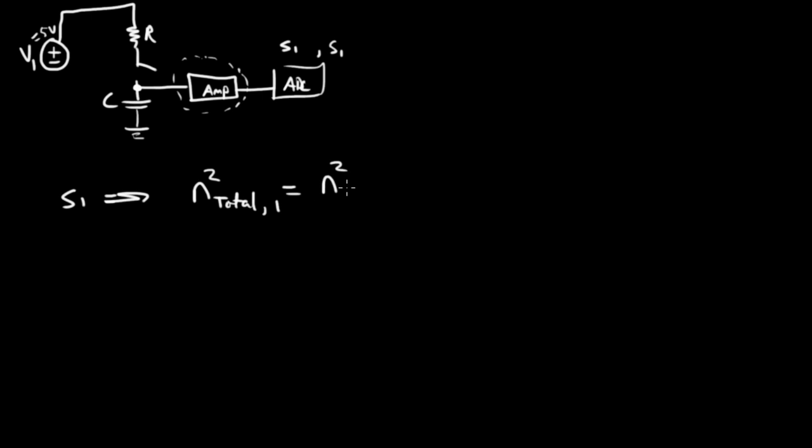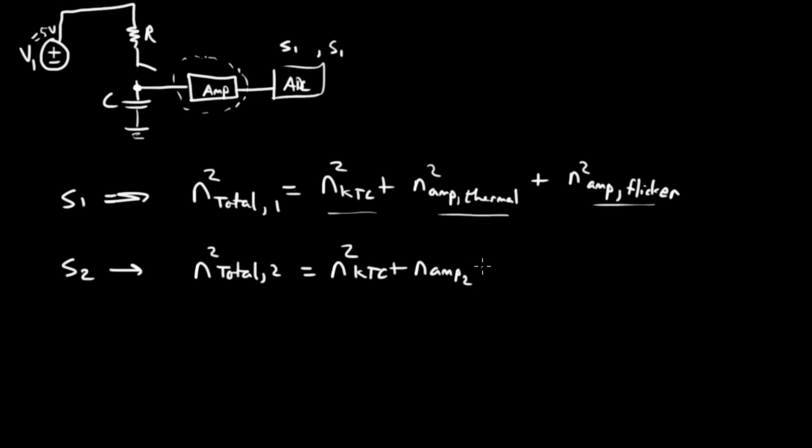It equals the noise squared from KTC noise, plus the noise squared from the amplifier thermal noise, the white noise, plus the noise squared from the amplifier from flicker noise. Here's the flicker noise component, here's the thermal noise component of the amplifier, and this is the reset noise on that capacitor. And let's say in sample two, we have the parallel formalism where it would be NKTC squared plus NAMP2 thermal squared plus NAMP2 flicker.